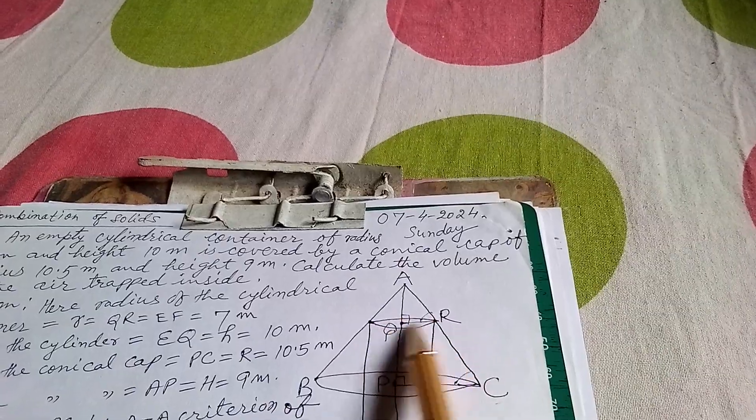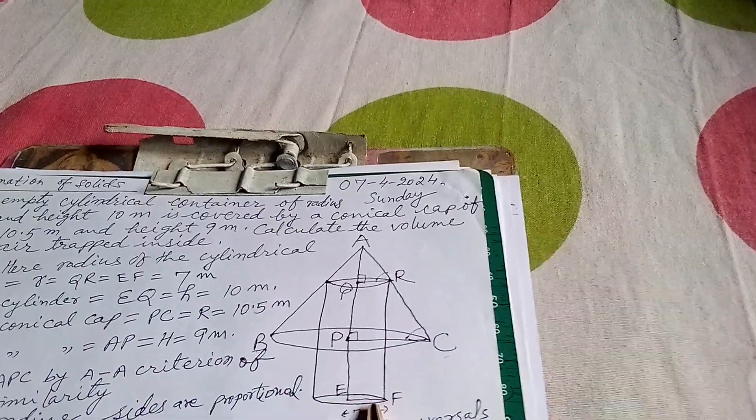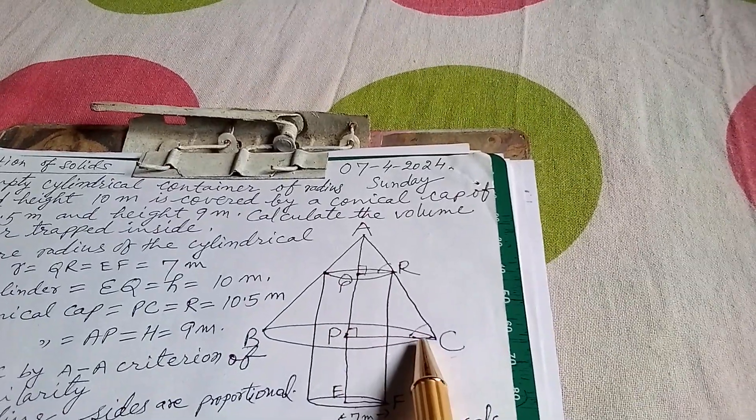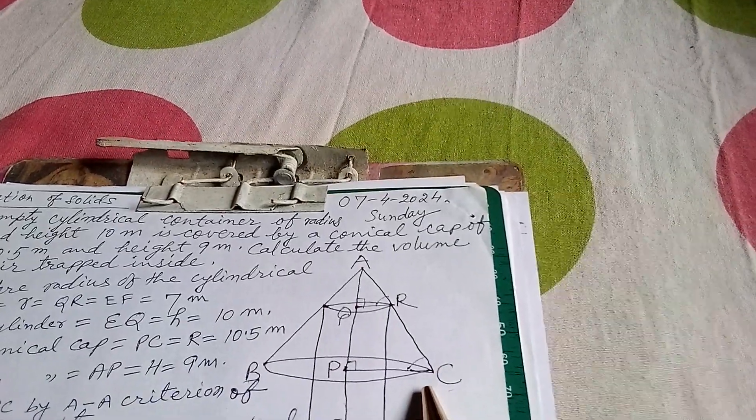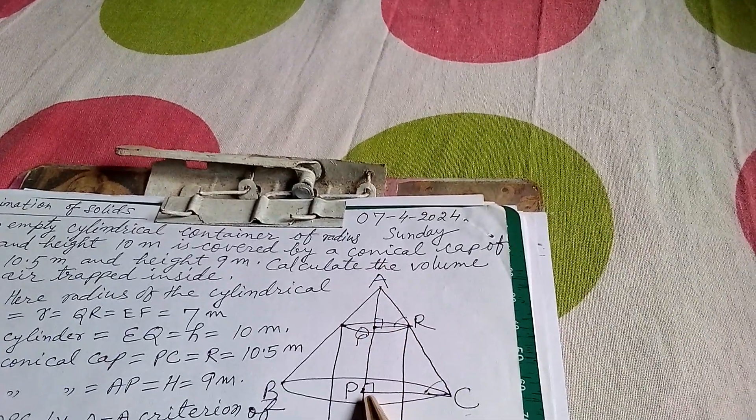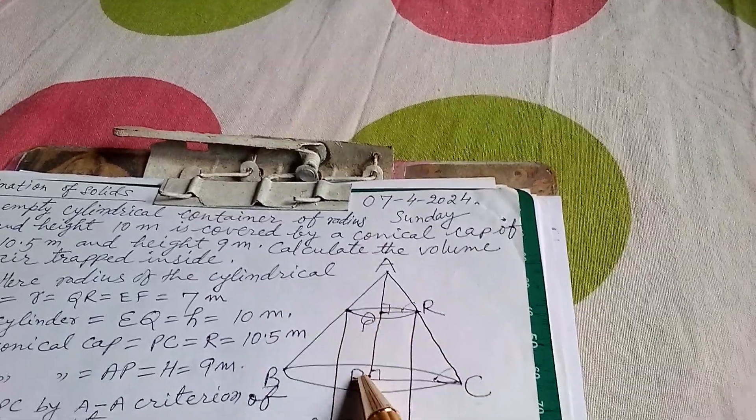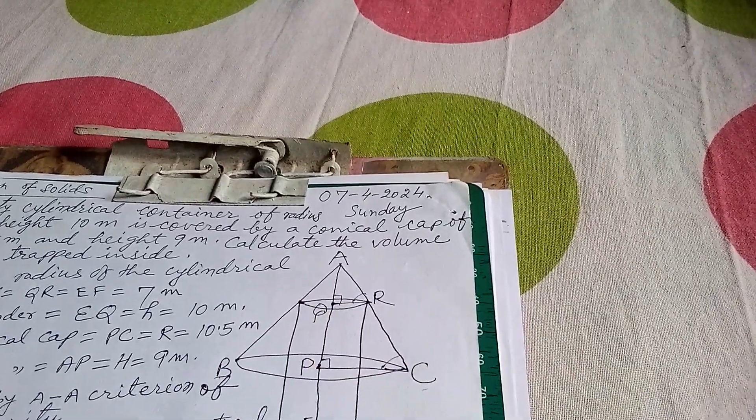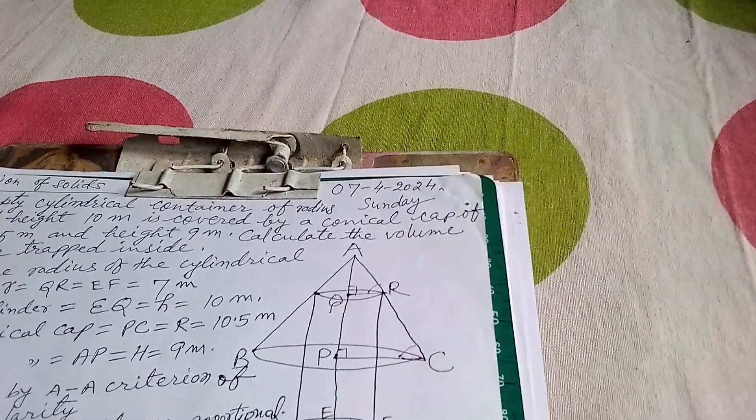QR is the radius of the cylinder which is equals to EF, that is 7 meter, and this is the radius of the conical cap. AP is the height of the conical cap and PQ is the height which is trapped inside the conical cap, and EQ is the height of the cylinder.